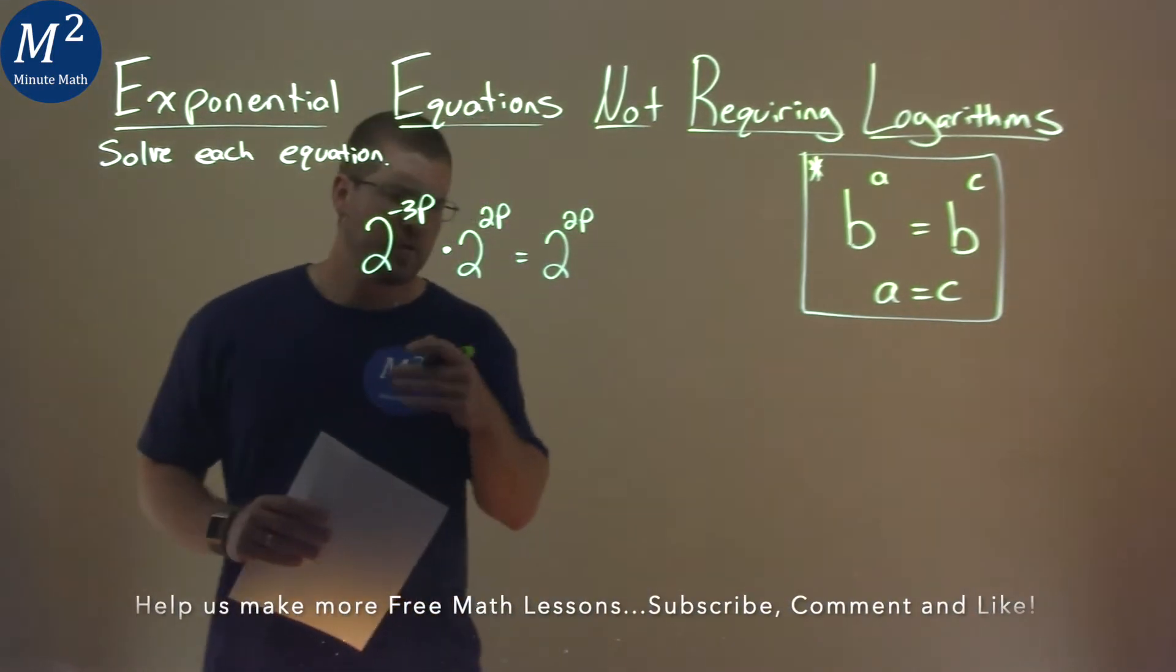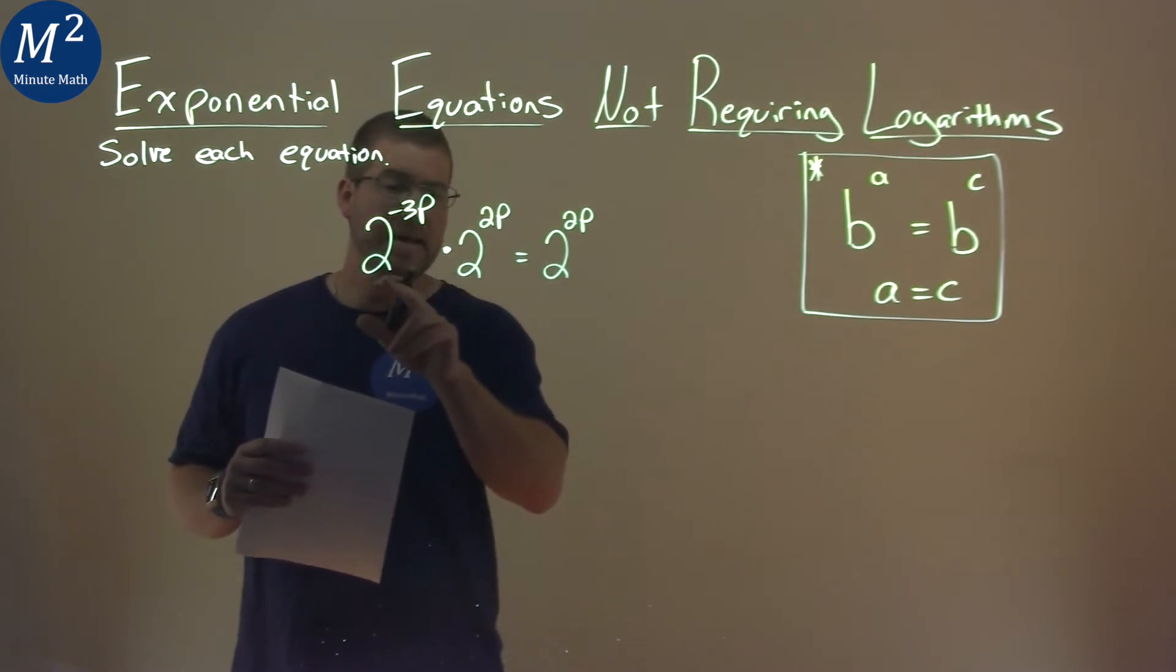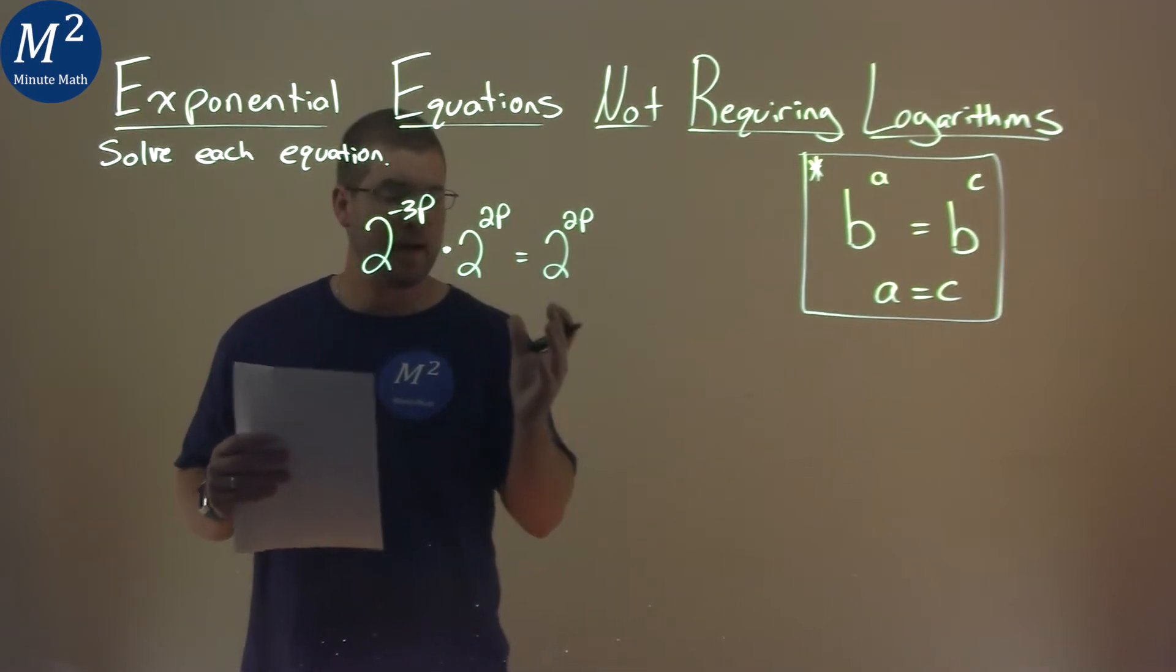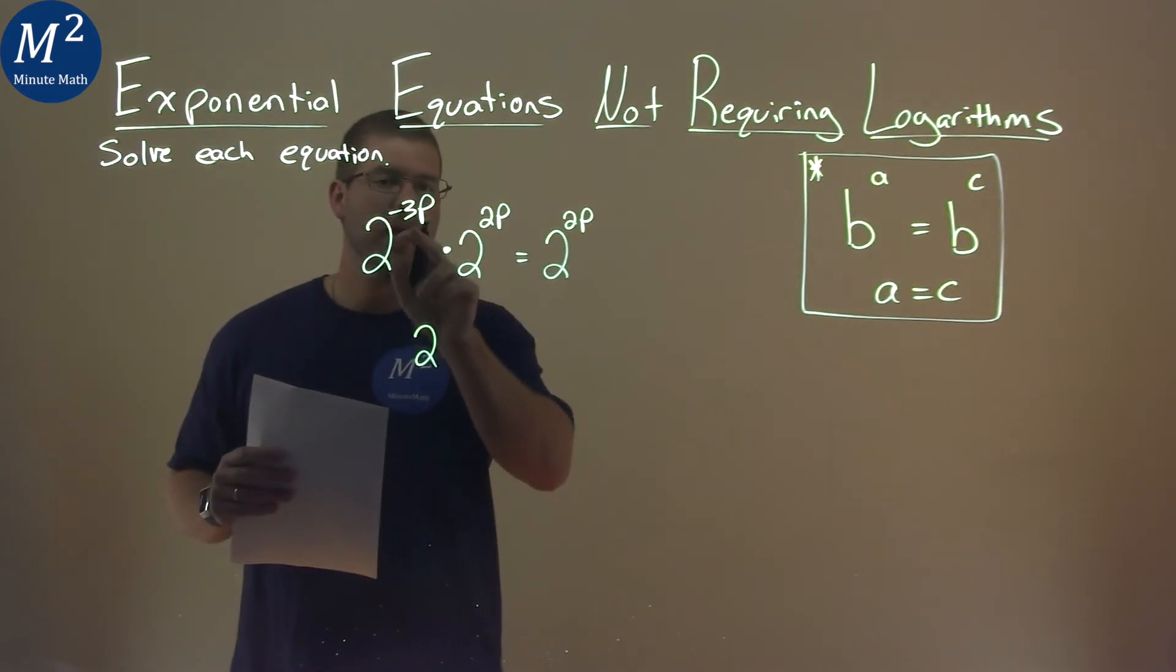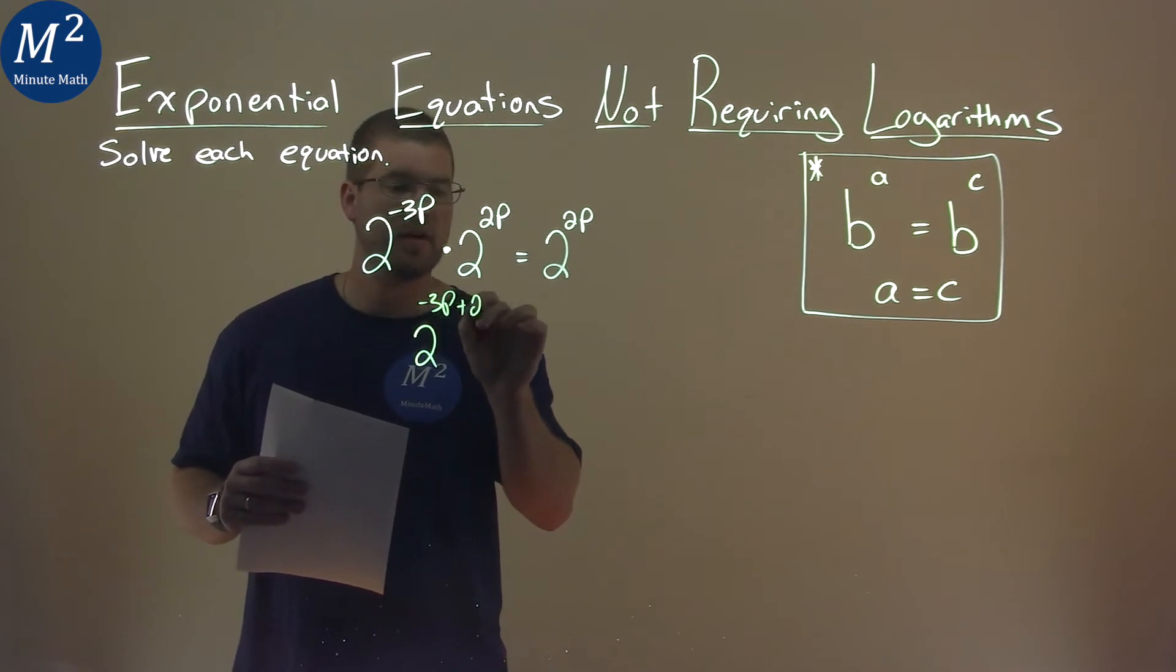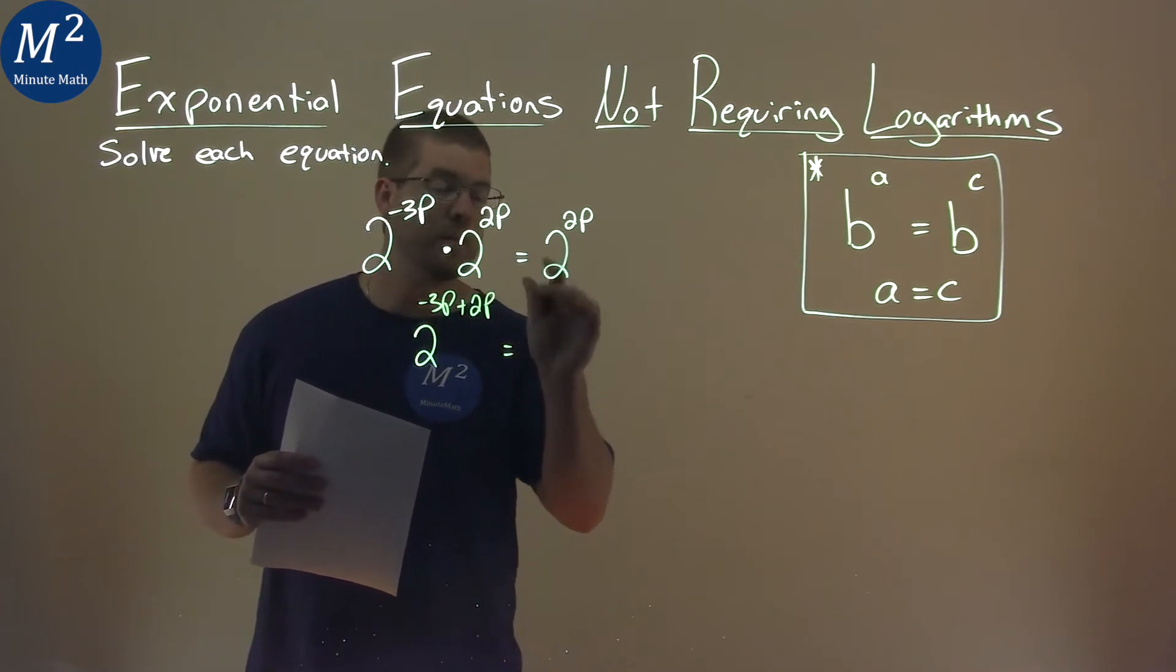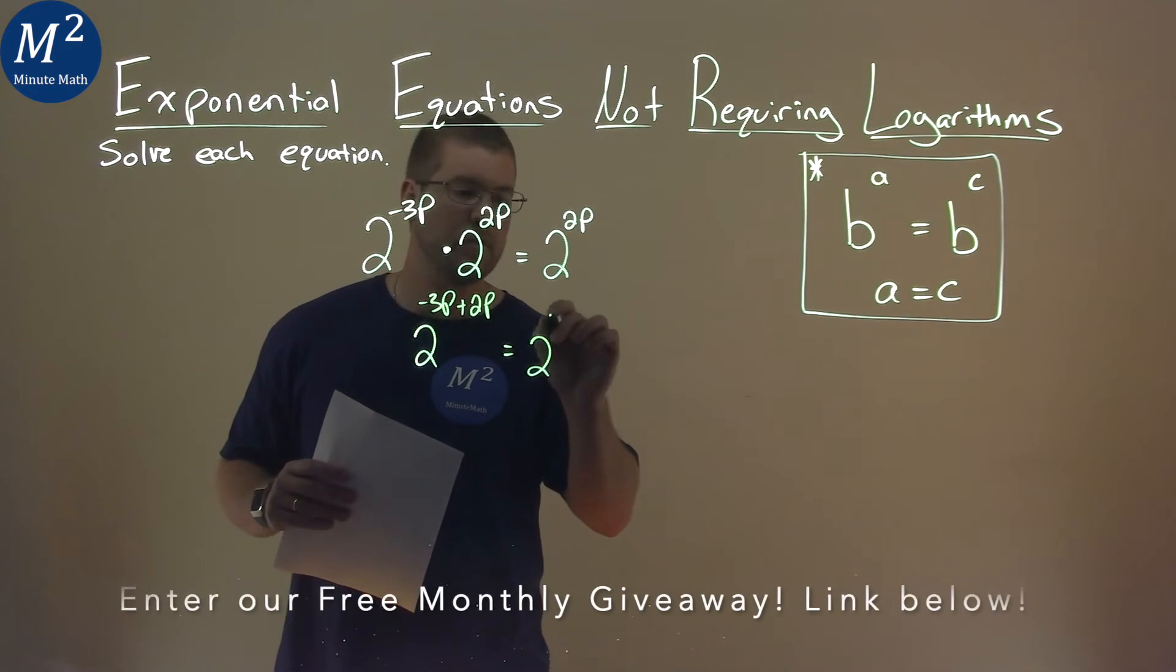Our rules about exponents here is when they have a same base being multiplied, we can combine it with a single base, which is 2 here, and all we have to do is add the exponents. So negative 3p plus 2p. And that's going to be equal to the right-hand side, 2 to the 2p power.